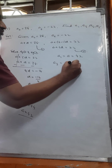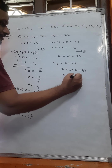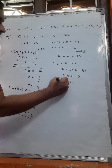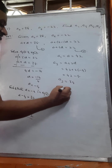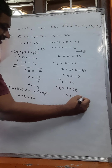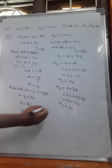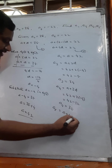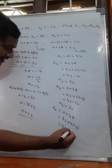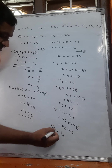Now find the remaining terms. a3 means a plus 2d: 42 plus 2 into minus 4 equals 42 minus 8, which is 34. a4 means a plus 3d: 42 plus 3 into minus 4 equals 42 minus 12, which is 30. a5 means a plus 4d: 42 plus 4 into minus 4 equals 42 minus 16, which is 26.